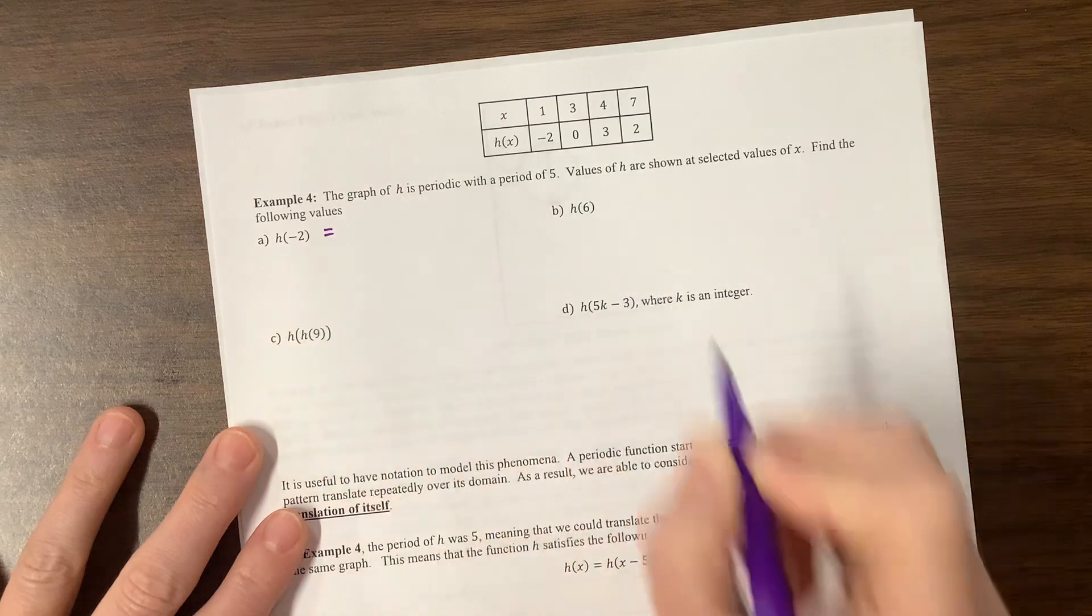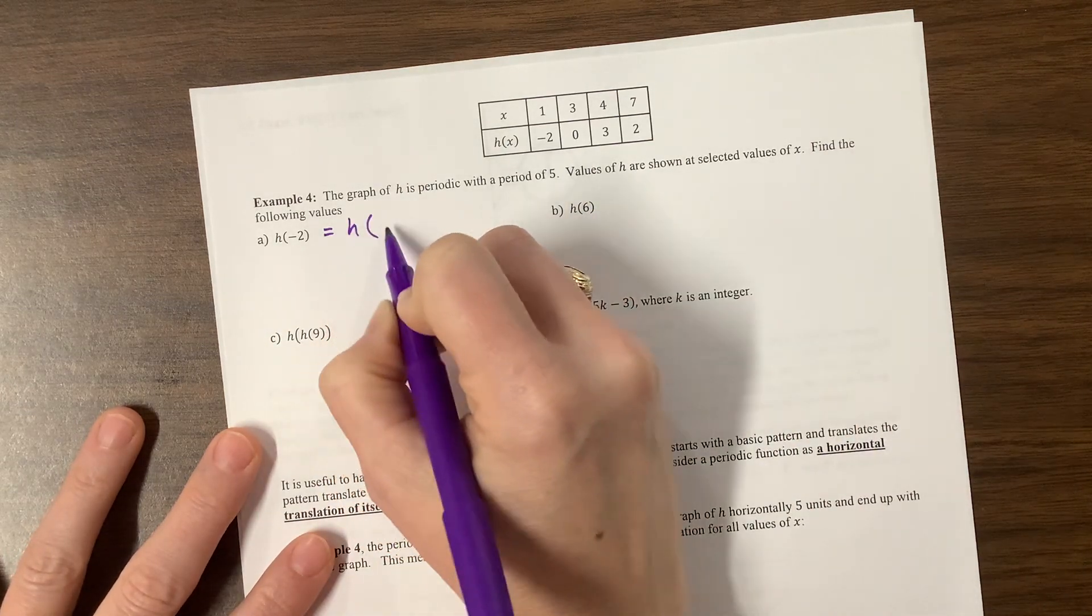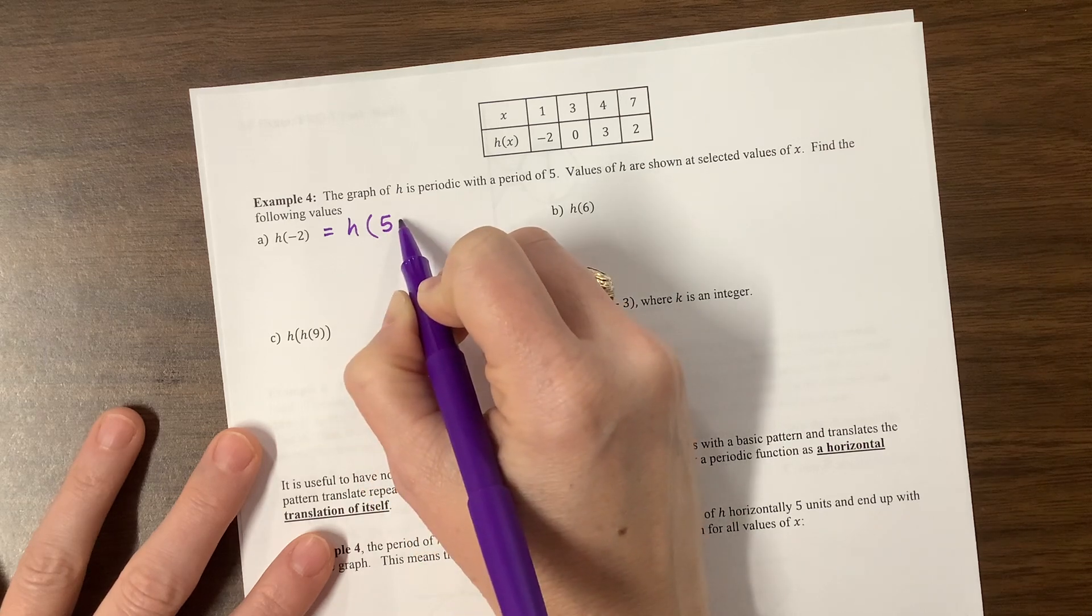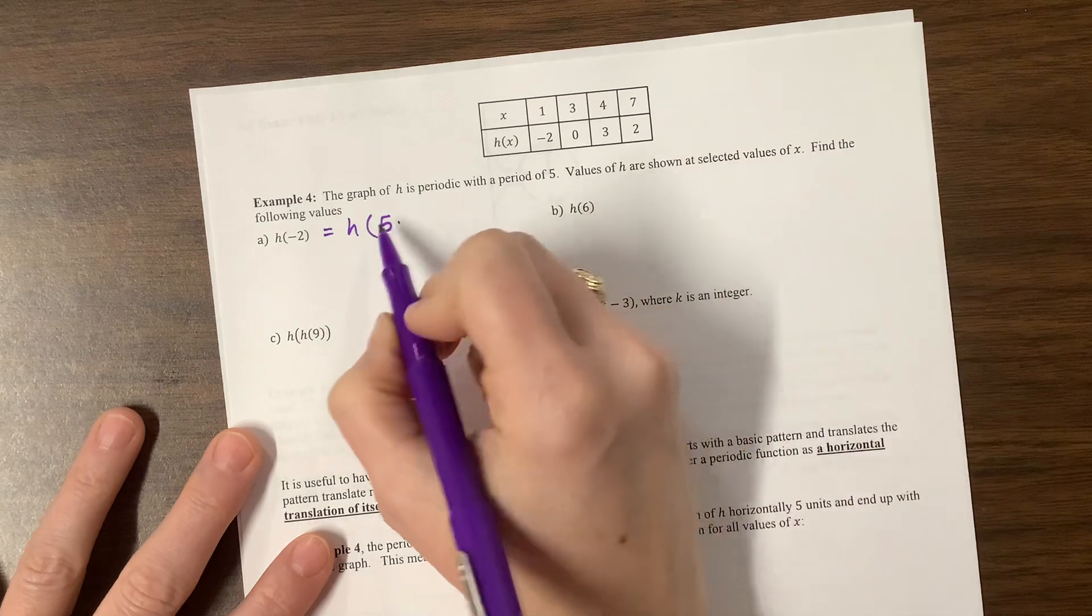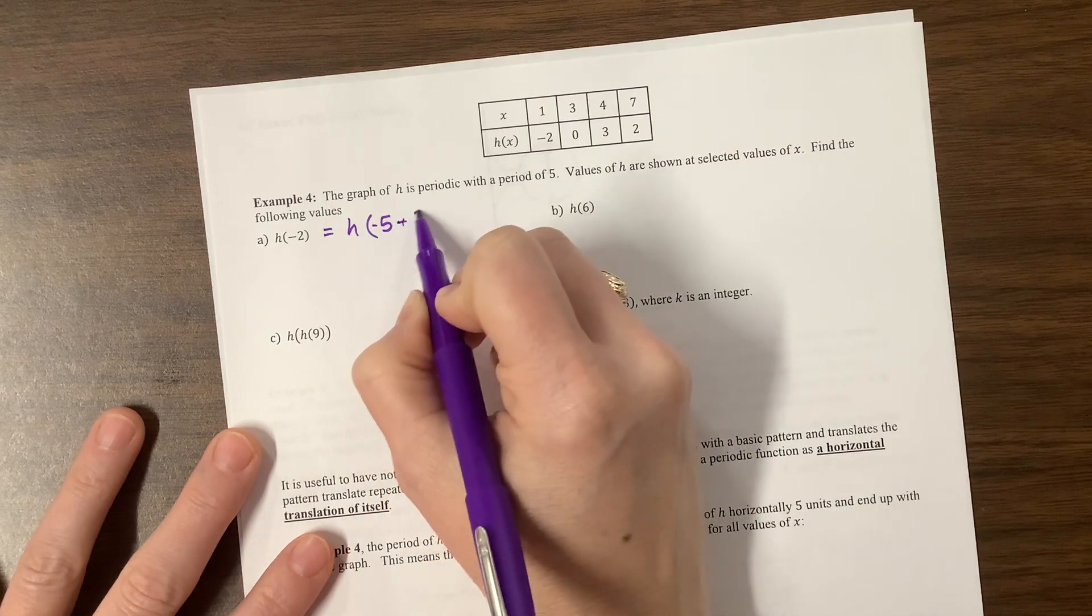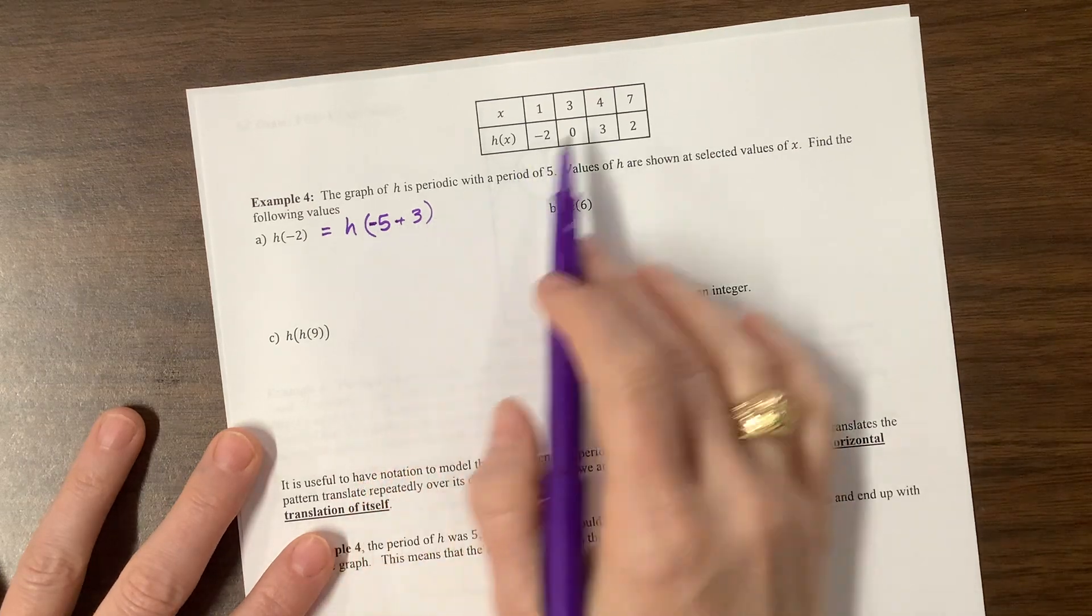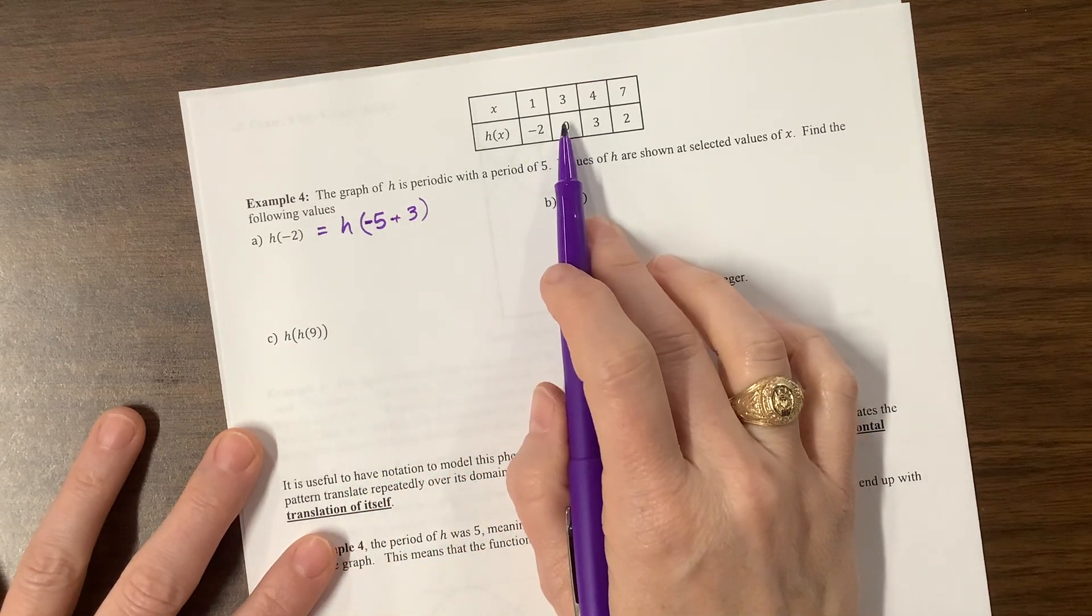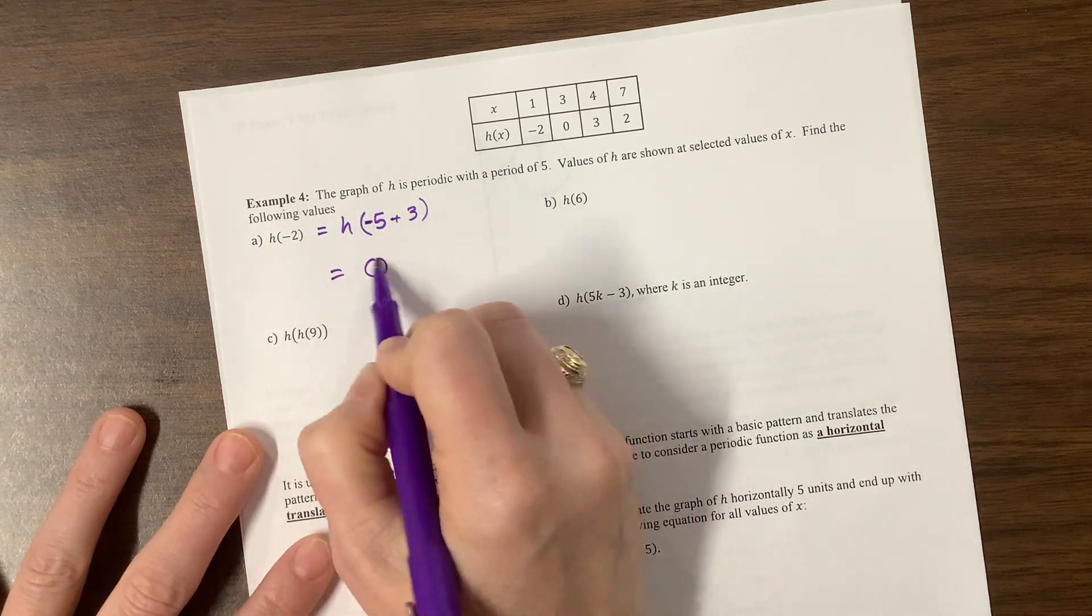H of negative 2 would be the same thing as H of 5 minus... No, what is that going to be? Negative 5 plus 3. So if I take my period, whatever happened at 3 is going to also happen 5 units before 3 at negative 2. And so this is equal to 0.